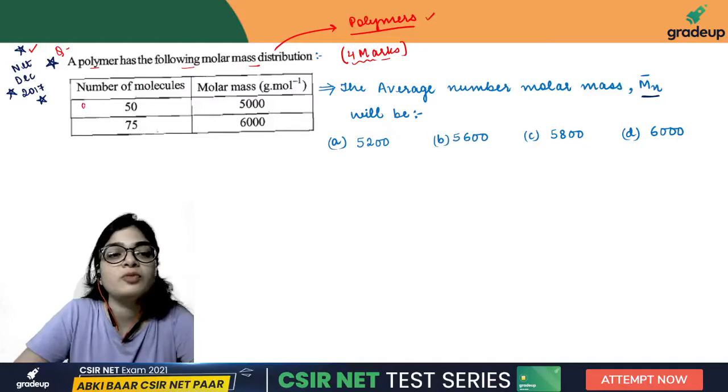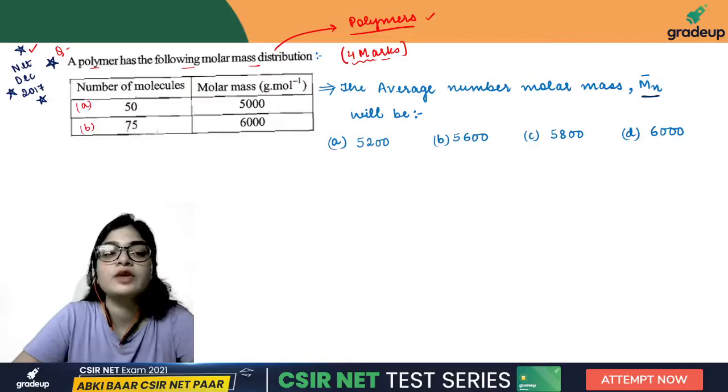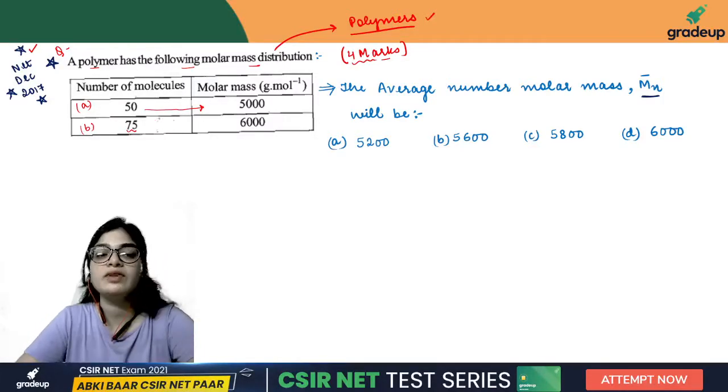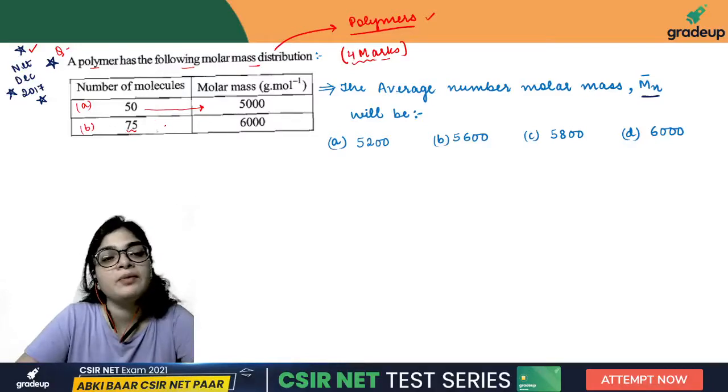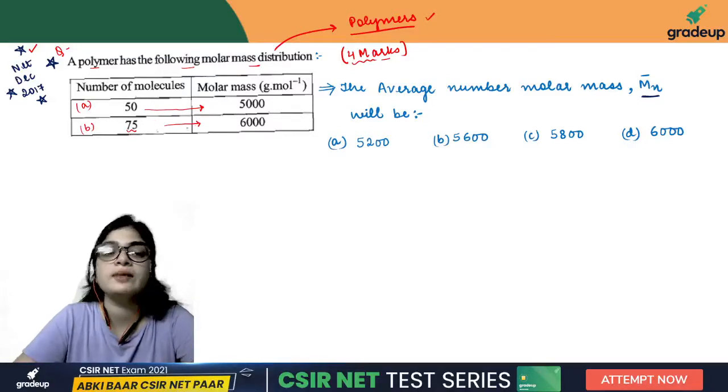The number of molecules is 50 in the first case, and 75 in the second case. The corresponding molar mass was 5000 and 6000.